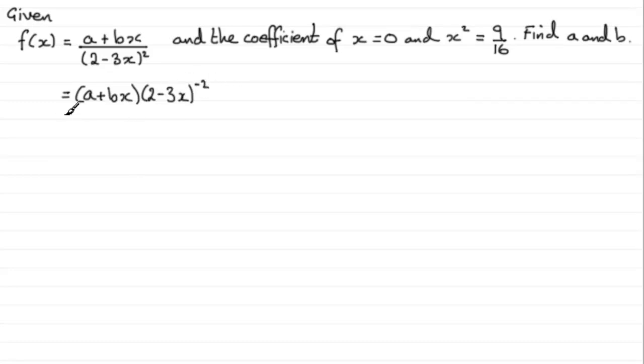In the previous part of the question we expanded (2 - 3x) to the power minus 2, so we can use that answer. We found it was 1/4 + 3/4x + 27/16x² + 27/8x³ and so on.